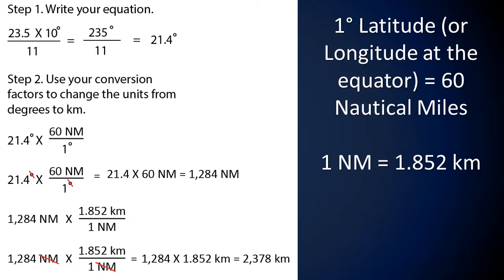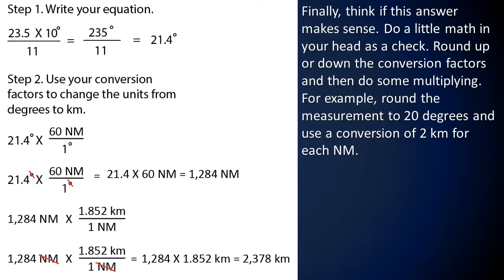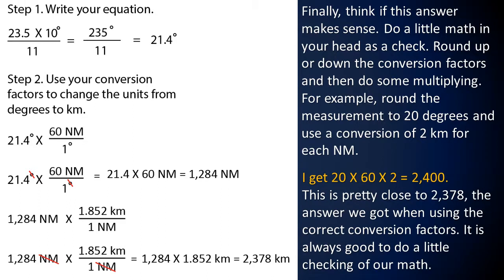The length of that arrow is 2,378 kilometers. Think about whether this answer makes sense — do a little mental math as a check. Round up or down the conversion factors and multiply: rounding the measurement to 20 degrees and using 2 kilometers per nautical mile gives 20 × 60 × 2 = 2,400 kilometers, which is close to 2,378. It is always good to do a little checking of your math.